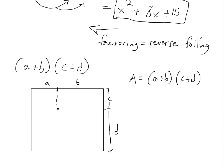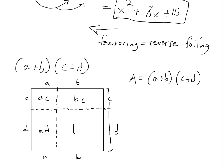If we draw a line through wherever the section ends, we can identify each sub-rectangle. The area of this rectangle is B times C, and this one here is A times C — same height. Then this section is A times D, and similarly this one is B times D. The proof is quite simple: we're multiplying every single term.